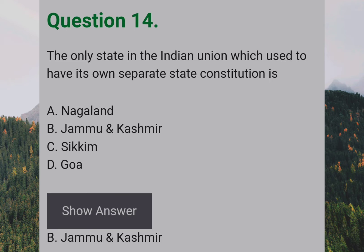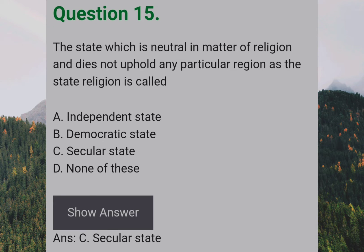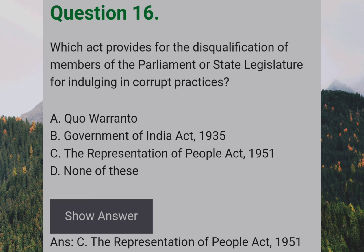The only state in the Indian Union which used to have its own separate state Constitution is: Answer: B — Jammu and Kashmir. A state which is neutral in matters of religion and does not uphold any particular religion as the state religion is called: Answer: C — Secular State.